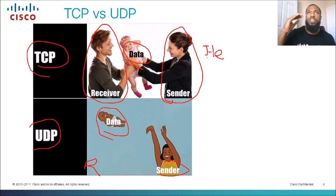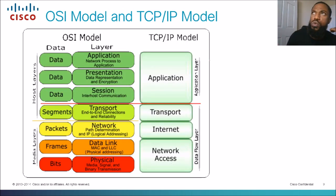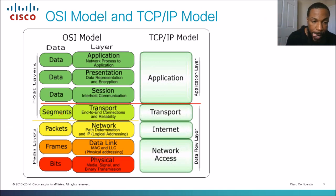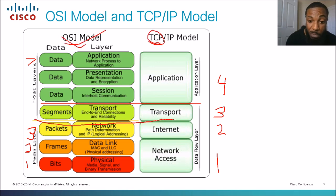Before we get into the official definition, let's talk about the OSI model and the TCP/IP model. The OSI model has seven layers, whereas the TCP/IP model has only four layers. We're not worried about the OSI model for now — we're focused on the TCP/IP model, specifically the transport layer, because we're talking about a sender and a receiver transporting data.